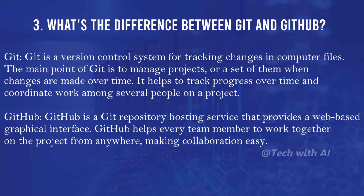What's the difference between Git and GitHub? Git is a version control system for tracking changes in computer files. The main point of Git is to manage projects or a set of them when changes are made over time, helping to track progress and coordinate work among several people. GitHub is a Git repository hosting service that provides a web-based graphical interface, helping every team member work together on a project from anywhere, making collaboration easy.